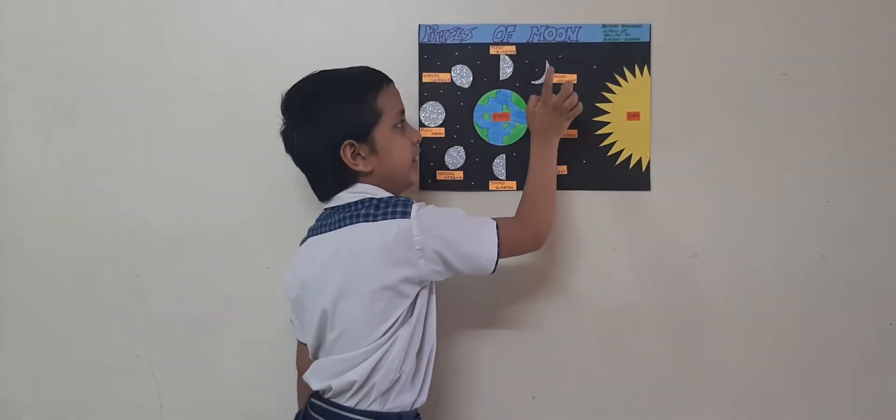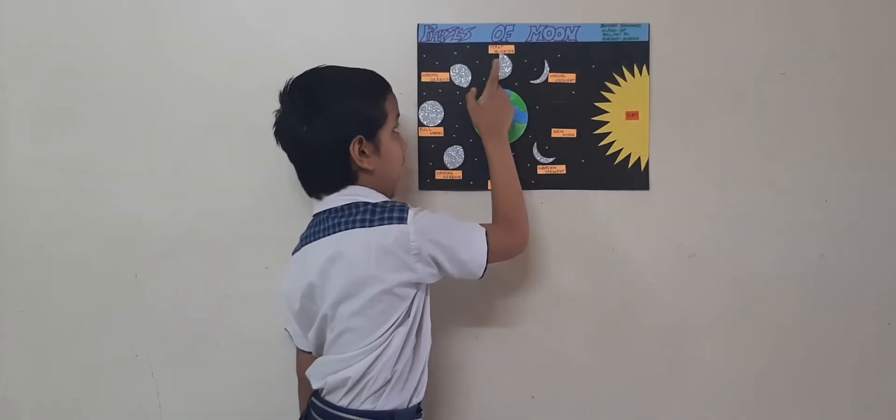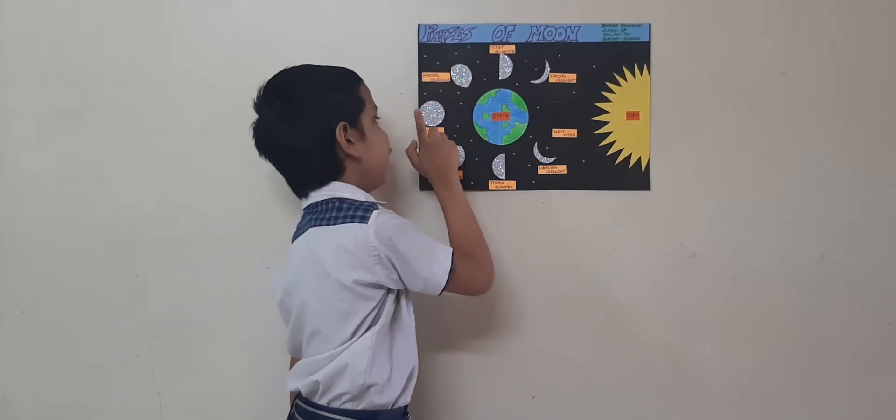You can see here: new moon, waxing crescent, first quarter, waxing gibbous, and then we get a full moon.